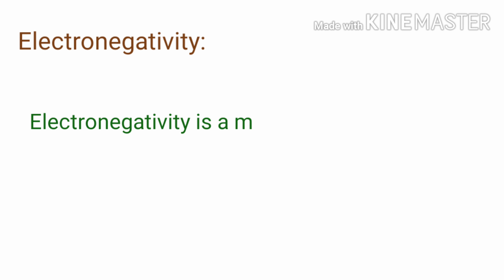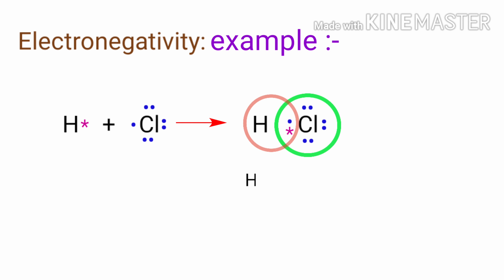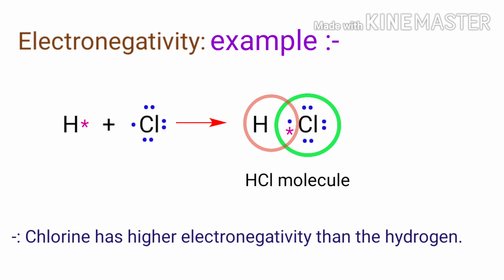Electronegativity is a measure of the tendency of an atom to attract a bonding pair of electrons. For example, the chlorine atom has a higher electronegativity than the hydrogen atom, so the bonding electrons will be closer to the chlorine than to the hydrogen in the HCl molecule.